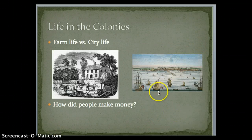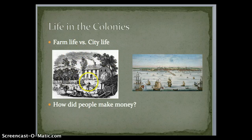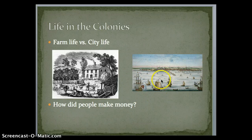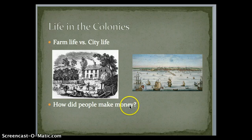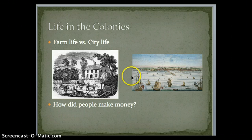Now let's talk about life in the colonies. There are basically two types of communities: farm life, which we see on the left, and city life on the right, which really attached them to the water. Major ports included a lot of trade and things like that. I want you to think about how people were making money and what kind of jobs you would see in these different regions throughout the colonies during this time period.